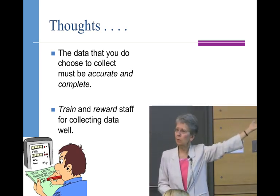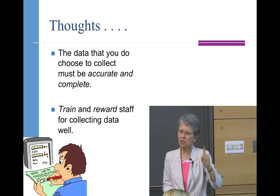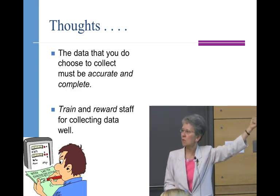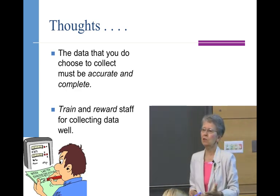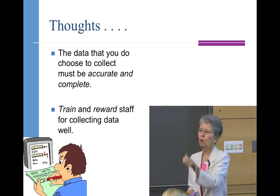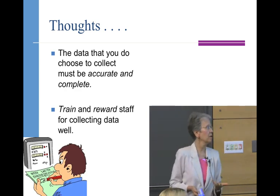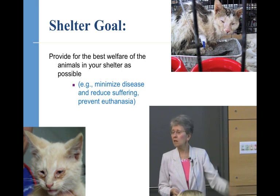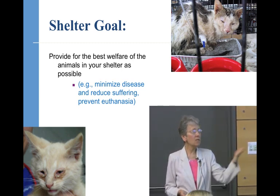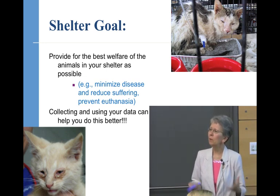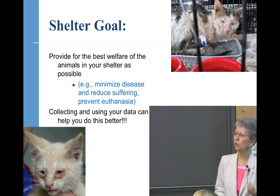Train people well to enter data, and make an impression on the staff that this is something very important — the quality of what they do here actually impacts the health of these animals. Many times they see it as busy work. If they understand it's not just busy work, that it really can impact the health of the animals in that shelter and help you set goals and monitor what's happening, I think we can get better compliance with it. Our goal is to provide the best welfare for animals in our shelters — minimizing disease and minimizing suffering. This is one more tool you can use to help do that. My take-home message is: at least go home and think about it, and I hope some of you will really start to do this.